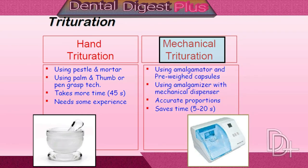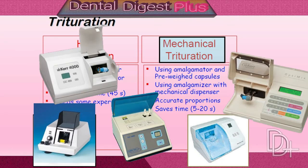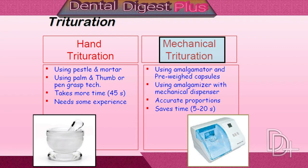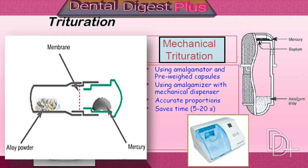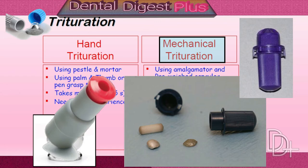Mechanical Trituration. The mechanical device used for mechanical mixing of dental amalgam is called an amalgamator. Amalgamators are available in different speed settings. The amalgamator uses a capsule containing alloy and mercury. There are disposable capsules which contain pre-proportioned alloy and mercury, and empty capsules in which you can dispense the alloy and mercury yourself. Some capsules contain a cylindrical metal or plastic piece inside, which serves as a pestle inside the capsule.